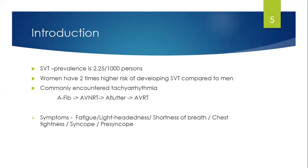The most common symptoms are fatigue, lightheadedness, shortness of breath, and chest tightness. Syncope and presyncope tend to occur more in older people who don't tolerate fast tachyarrhythmia. Younger people tend to tolerate it better because it can be physiological with stress. They don't usually present with syncope unless the rate is very fast — 220, 240 beats per minute or so.